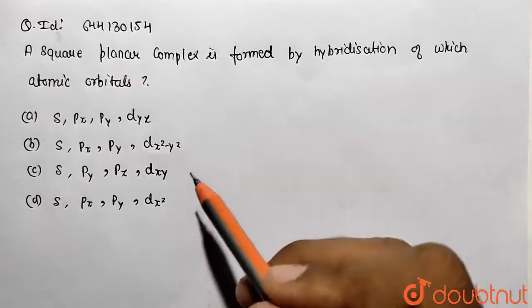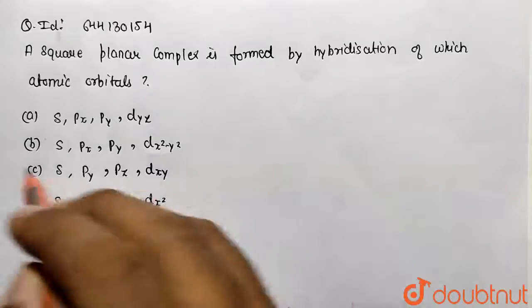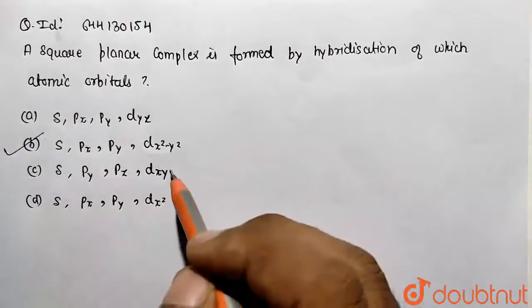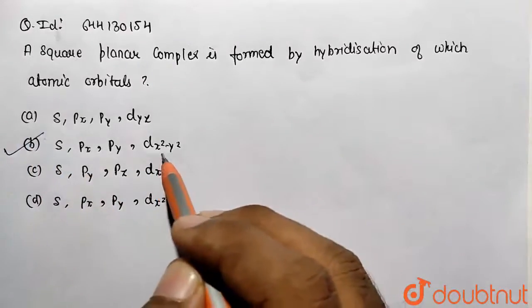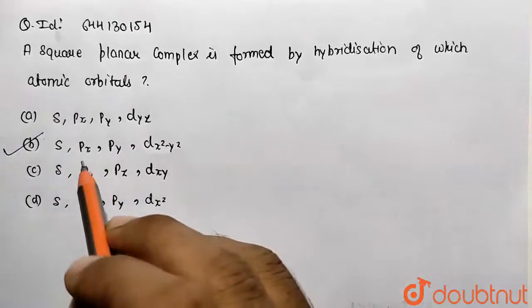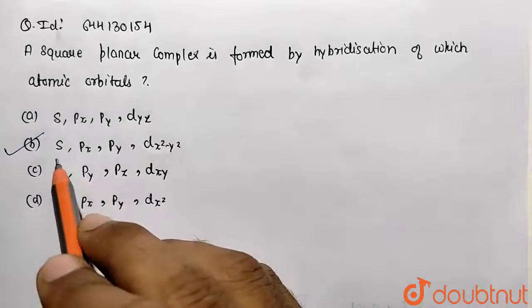This is a theoretical question and the answer is option b directly, because it is being formed from the contribution of dx² - y² orbital, then px, then py, and correspondingly s orbital.